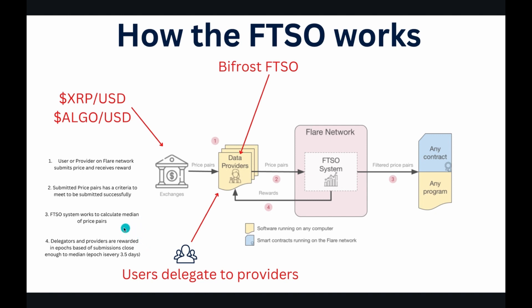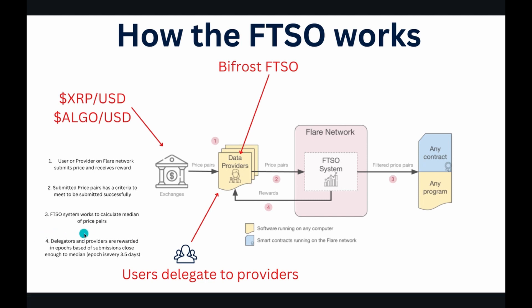In comparison to Songbird, which repeats every 7 days, the Flair reward epoch is every 3.5 days. This makes sense why the auto-claim functionality was in place quite early in comparison to the Songbird network.